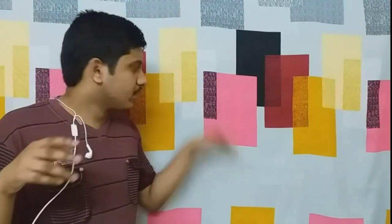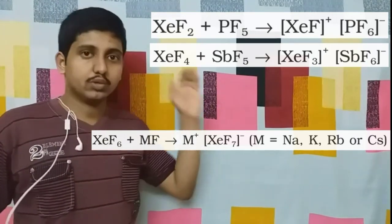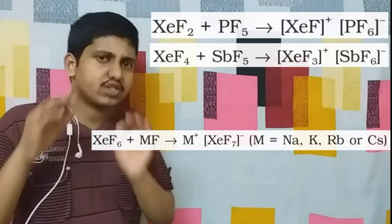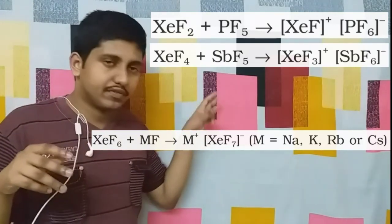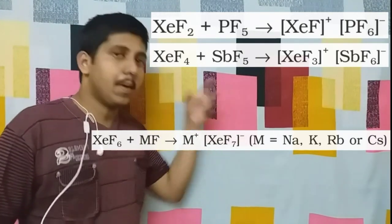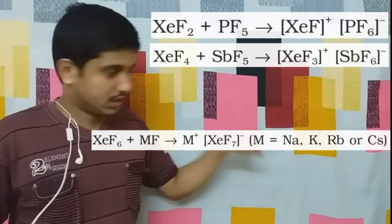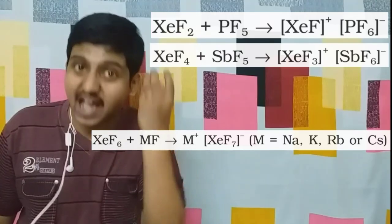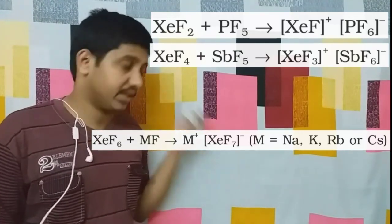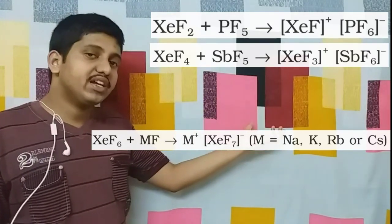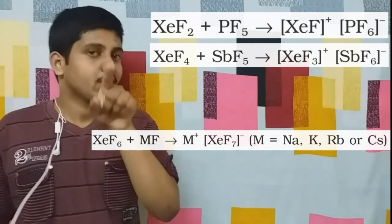Now let's go to reactivity. Next important thing regarding reactivity: XeF2 reacts with PF5, which is a very important reaction that most students leave. XeF2 also reacts with metal fluorides, especially alkali metal fluorides. What is happening here is the metal acts as the plus ion, so M+ and metal fluoride, giving XeF7- in liquid form.